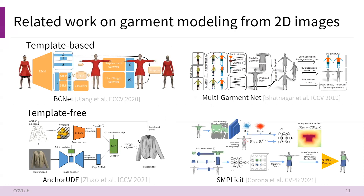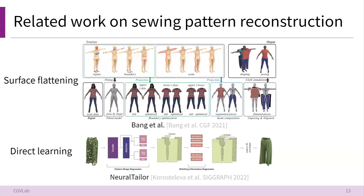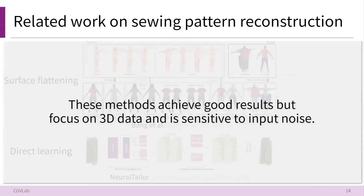The previous work on garment reconstruction can be roughly split into two genres: template-based methods, which mostly rely on SMPL templates, and template-free methods, which utilize the robustness of implicit functions. However, template-based methods cannot represent diverse garments due to the limitations of the template adopted, and template-free methods suffer from unwanted details and imperfect surfaces due to implicit function representation. Recently, there is much interest in utilizing sewing patterns as garment representation. These methods achieve good results but focus on 3D data and are sensitive to input noise.